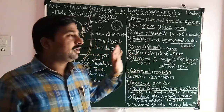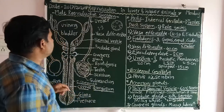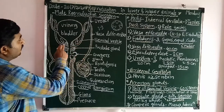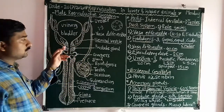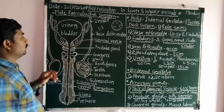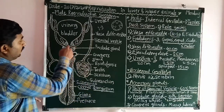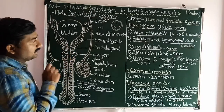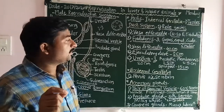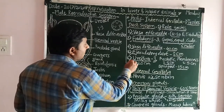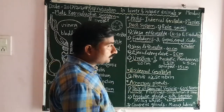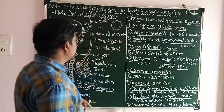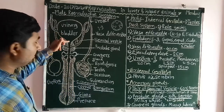The ejaculatory duct plays an important role in the conduction of semen. The last part of the duct system is the urethra, which is an important part of the duct system and starts from the urinary bladder.